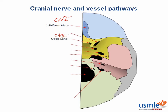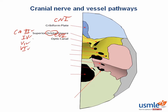Lateral to that we have the superior orbital fissure, where cranial nerves 3, 4, V1, and 6 pass through. In addition to these nerves, the ophthalmic vein and sympathetic fibers also pass through here. It makes sense that this is the orbital fissure — orbital meaning the orbit, or where the eye is. Cranial nerves 3, 4, 6, and the first division of the trigeminal nerve are all important for functions of the eye, mostly motor movement, so it makes sense they travel together through this foramen.